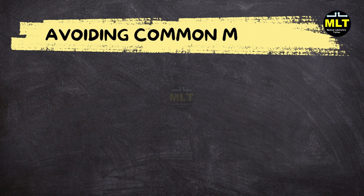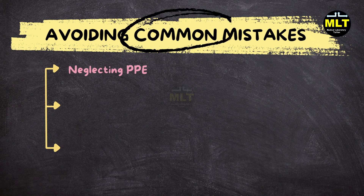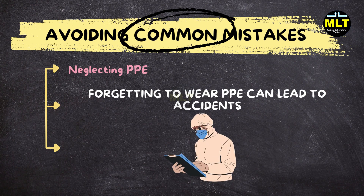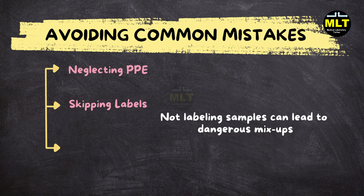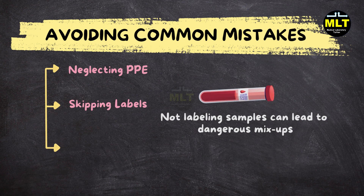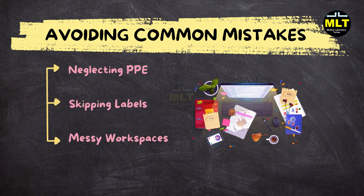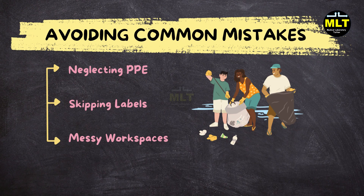Section 6: Avoiding Common Mistakes. Let's look at some common mistakes made in the lab. Neglecting PPE: Forgetting to wear PPE can lead to accidents. Always prioritize your safety by wearing the necessary protective gear. Skipping labels: Not labeling samples can lead to dangerous mix-ups. Make labeling a standard part of your routine. Messy workspaces: A cluttered lab can lead to accidents. Develop a habit of cleaning up after yourself to maintain a safe environment.